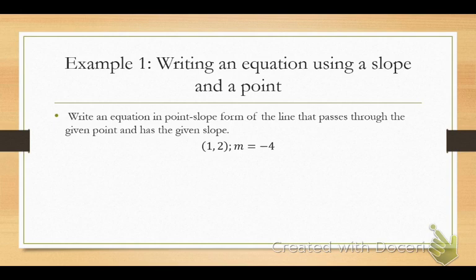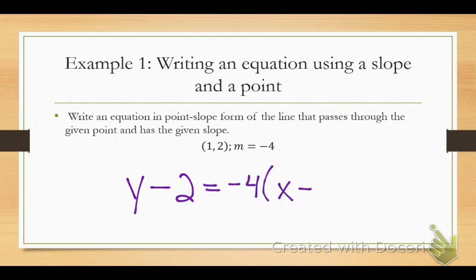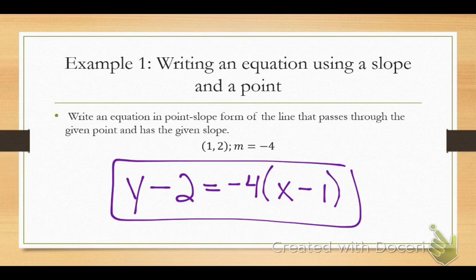Let's go over this together. When I plug in the values, I get y minus 2 equals negative 4 times x minus 1. It's a positive 1 because it was subtraction in the formula. My formula is x minus x1. When I plug in a positive number and there's already a subtraction sign there, it makes it subtraction. If I had plugged in a negative number, then yes, it would have become a positive.